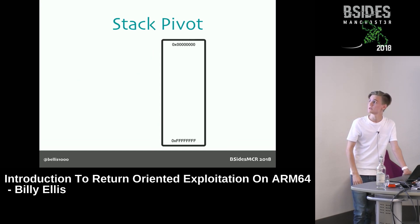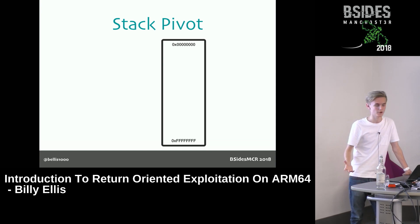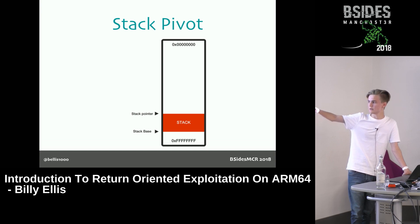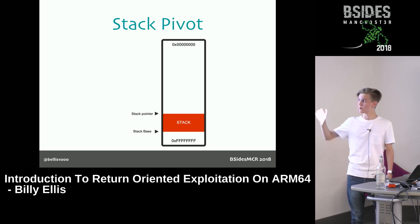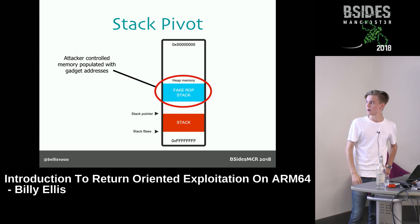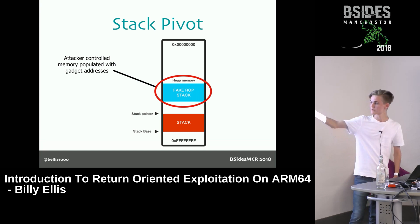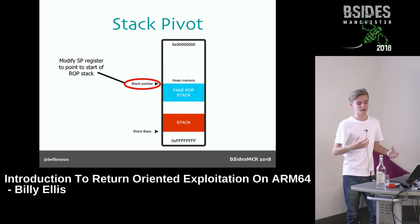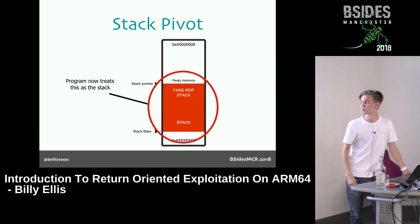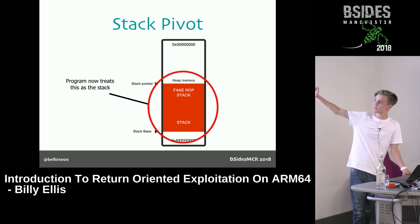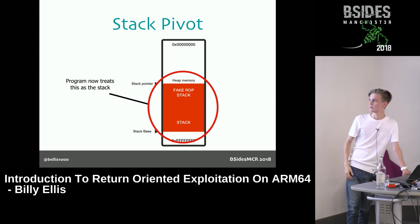With this knowledge you can see how a stack pivot would work. Assuming this is the whole process memory for a target program, the stack is reserved down here with a stack base and a stack pointer at the top. If you have some other block of memory you control — say heap memory with your fake ROP stack — you lay it out with gadget addresses. All you need to do to achieve the stack pivot is move the stack pointer so it points to the start of this heap memory. The program treats the stack as whatever the pointer points to, so this whole block gets treated as a stack. When your gadgets return, they return from gadget addresses in your controlled memory instead of the real stack.